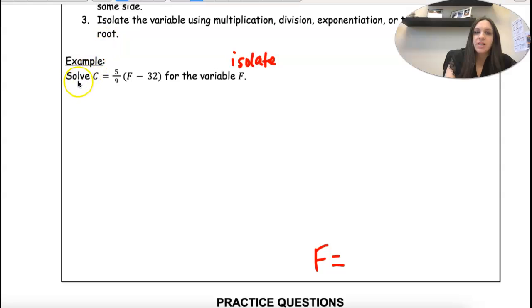Alright, so it says simplify. I know you really want to distribute that. But we don't need to. All that's going to do is put something next to F that we have to get rid of. So when we do this, you've got to think about what this means. This means 5 ninths times F minus 32.